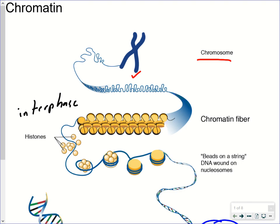During interphase, when the cell is carrying out its normal activities and not dividing, the chromosomes are not condensed because they need to be read. So instead of being in the condensed form, the chromosomes are in the form of chromatin. DNA is in the form of chromatin during interphase.